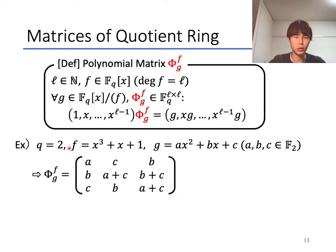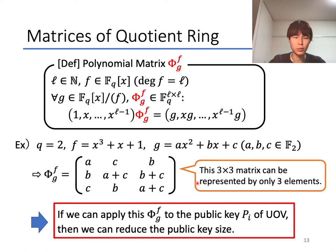For example, if q equals 2, f equals x^3 + x + 1, and then for any element g equals ax^2 + bx + c, Φ_g^f is determined like this form. Here, this matrix can be represented by only three elements a, b, c. And so, if we can apply such a Φ to the representation matrices P_i for the public key of UOV, then we will be able to reduce the public key size.